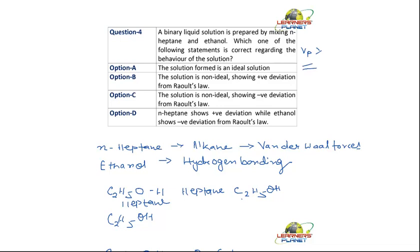Now let's see. The solution formed is an ideal solution. No. Because what happens in ideal solution? The vapor pressure of the solution is equal to the sum of pressures of pure solvents. So it is not showing that. Here it is greater than that of the sum of vapor pressure of pure solvents.